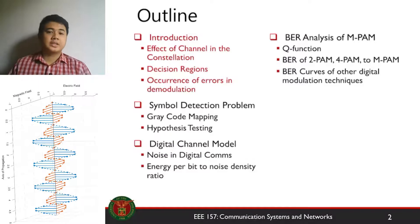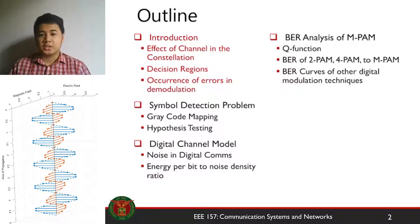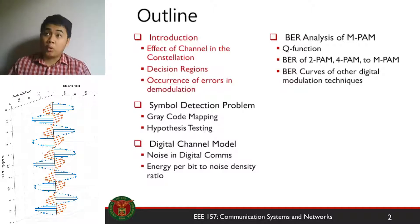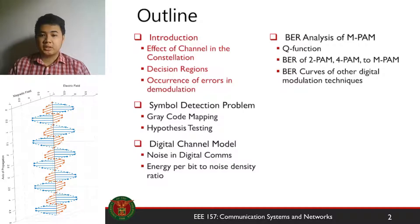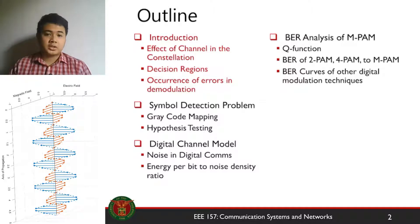Here's the outline of this lecture. The lecture will be divided into four parts. First, I'll introduce to you the effect of channels on constellation maps, and what role the decision region plays and the occurrence of errors in demodulation. The other part will cover the symbol detection problem — how the demodulator decides what symbol was transmitted based on its observation. We call that hypothesis testing.